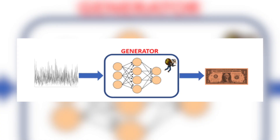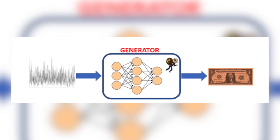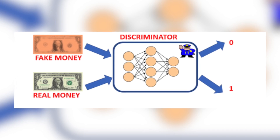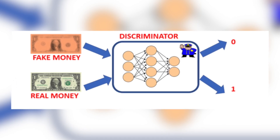Let's take a look at the generator and discriminator networks on their own, then put them together and train the entire GAN. The generator takes in a random noise signal and outputs images — it's trying to generate fake images that look like the real images from the training data. Its objective is to fool the discriminator. The discriminator is a basic neural network trained to perform binary classification: it outputs zero when the input image is fake and one when the input image is real.